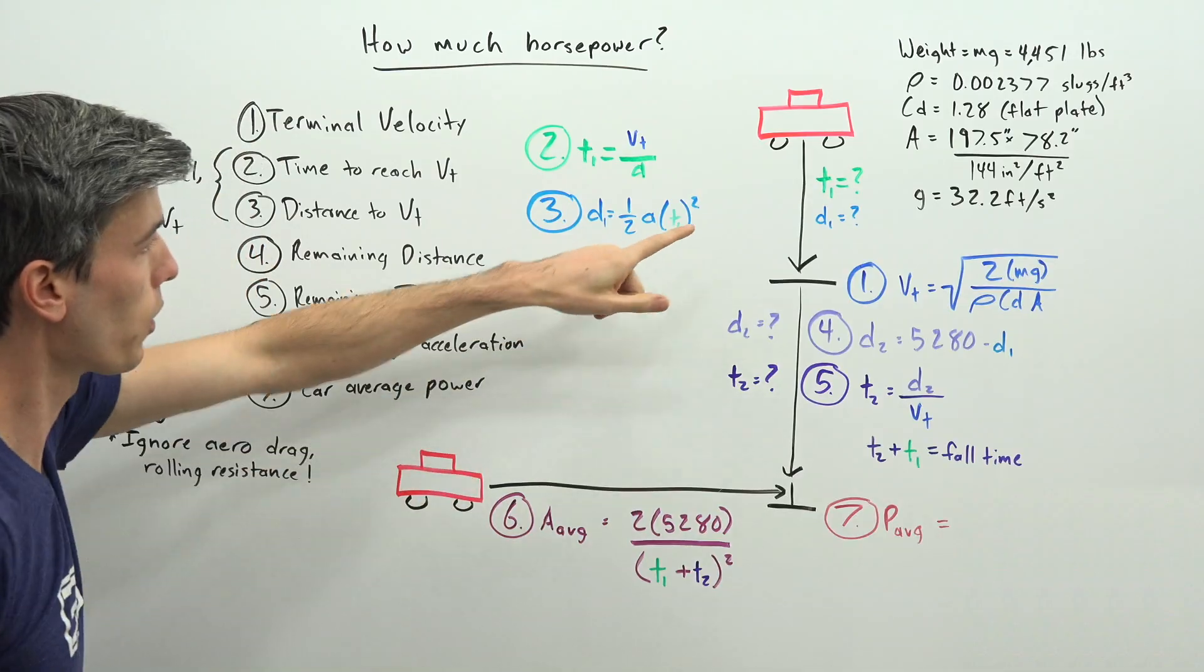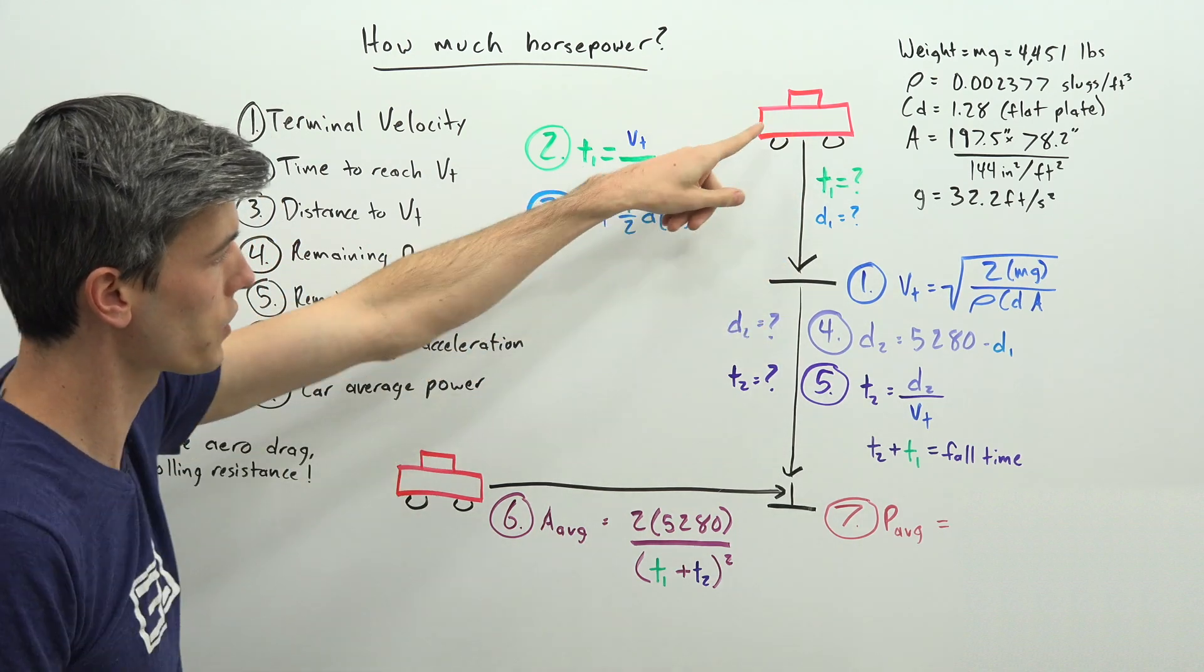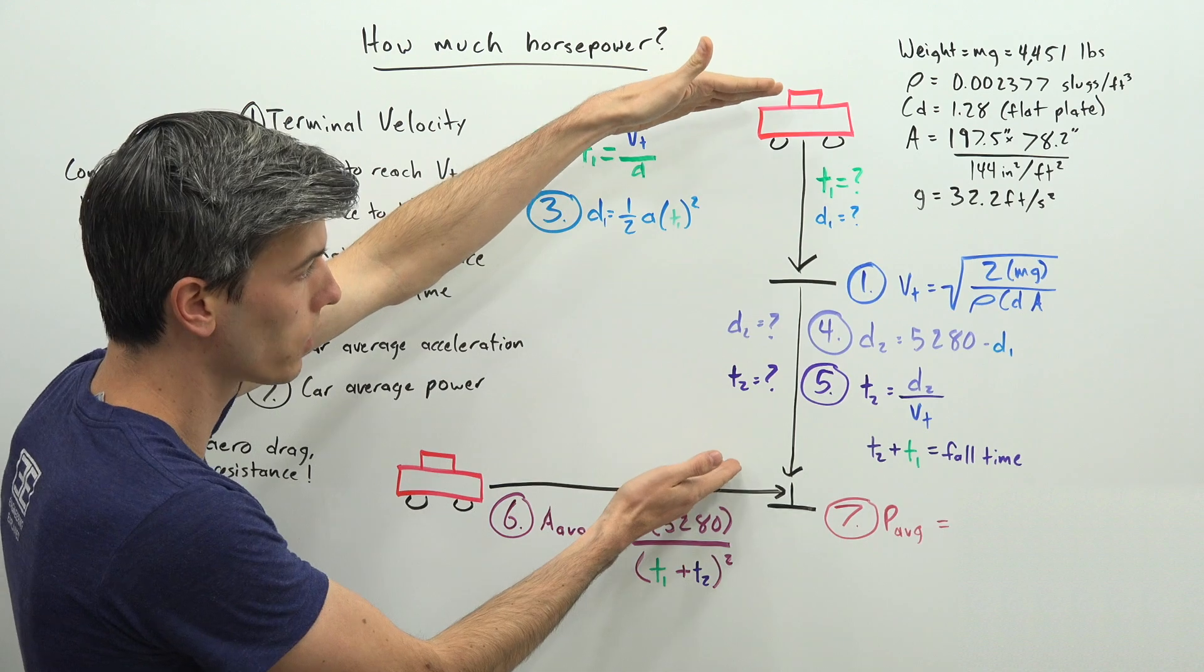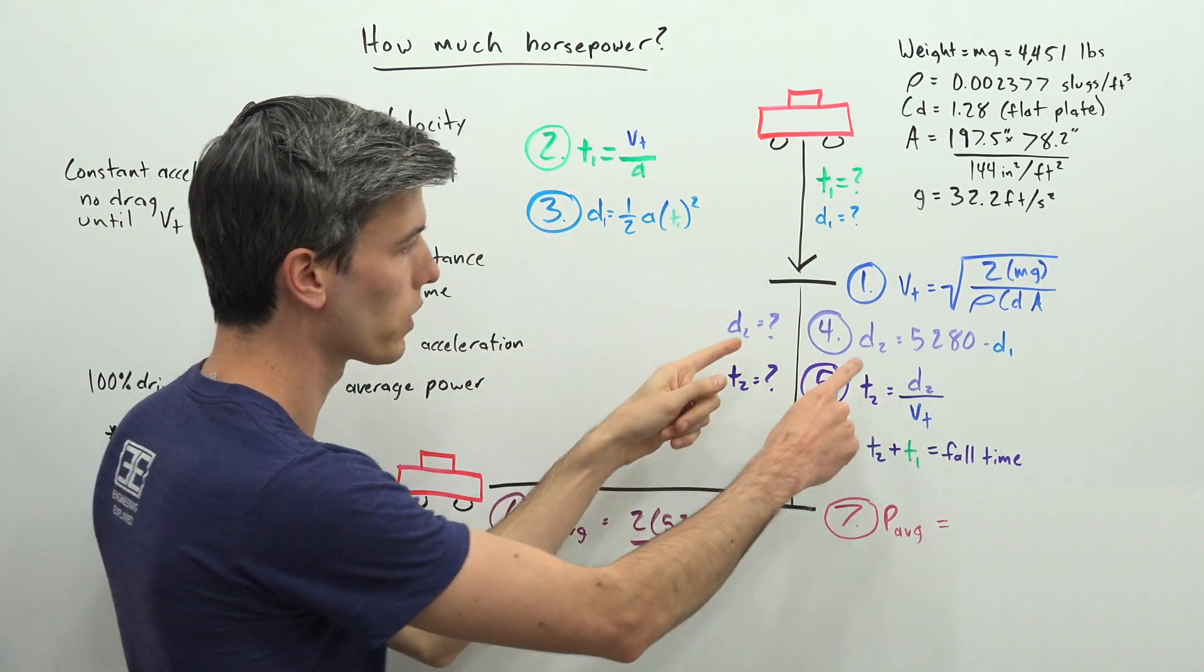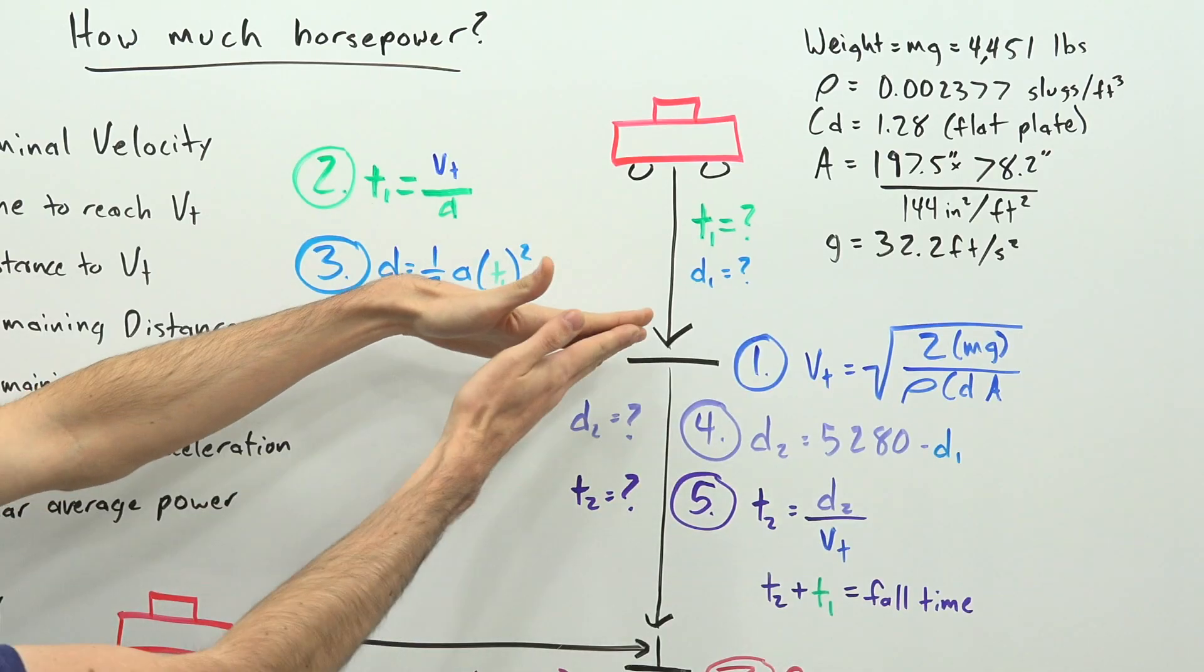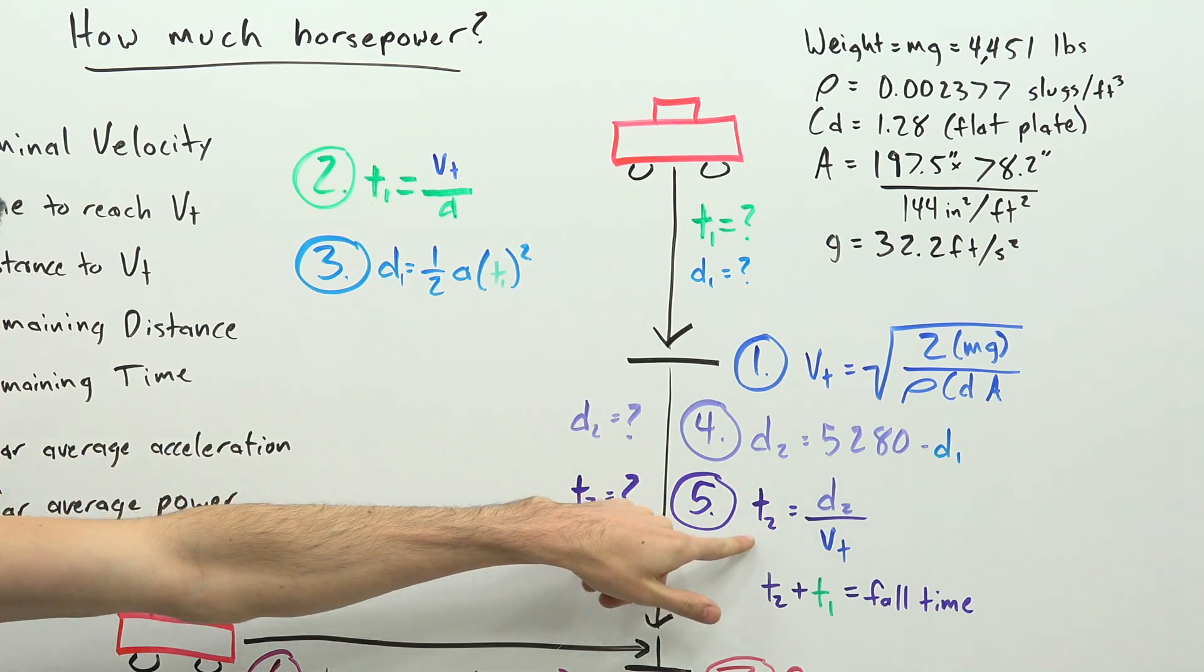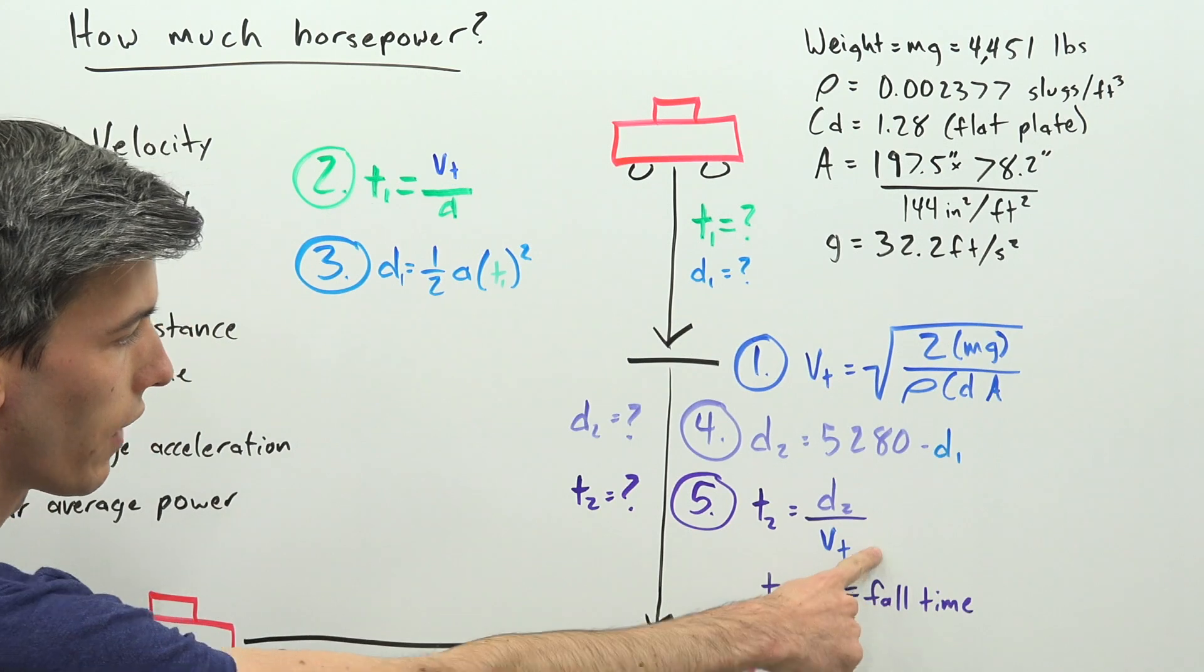Now with that time we can figure out how far that car then travels, so that will be our first distance. And so we have one mile total, we can subtract from that our distance one, and that will give us the remaining distance that car has to travel.